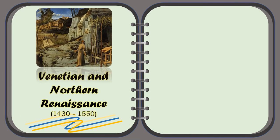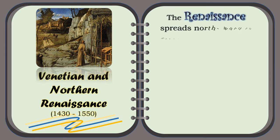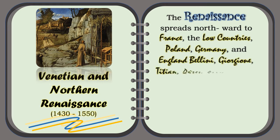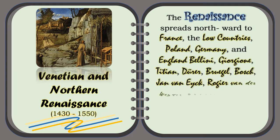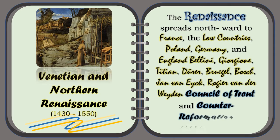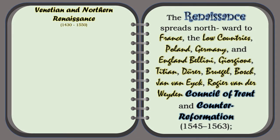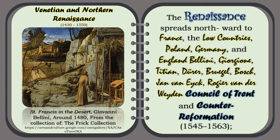The Venetian and Northern Renaissance. The Renaissance spreads northward to France, the Low Countries, Poland, Germany, and England. Artists include Bellini, Giorgione, Titian, Dürer, Bruegel, Bosch, Jan van Eyck, and Rogier van der Weyden — Council of Trent and Counter-Reformation. For example, the Saint Francis in the Desert by Giovanni Bellini, around 1480, from the Frick Collection.